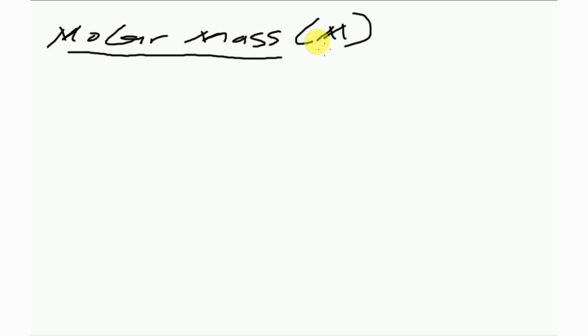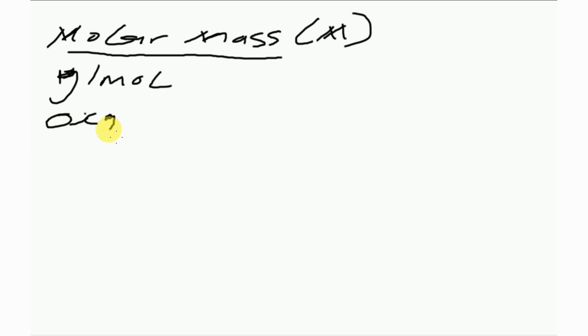The definition of molar mass is the mass of one mole of atoms or molecules. For example, if you have been told to find the molar mass of oxygen atom — that's 16 — so the molar mass of oxygen atom is 16 grams per mole.